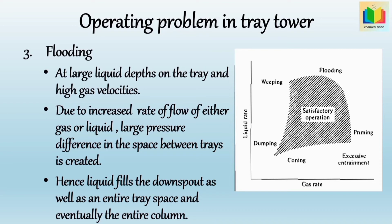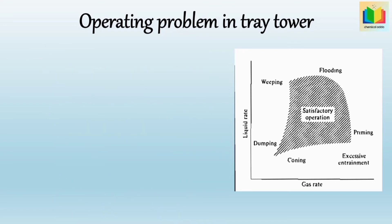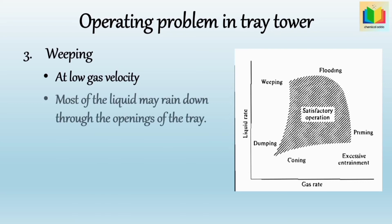The next operating problem is weeping. This occurs at a low gas velocity. Due to low gas velocity, most of the liquid may rain down through the openings of the tray — this condition is called weeping — which may block the path of gas flow and cannot maintain the liquid level on the tray.